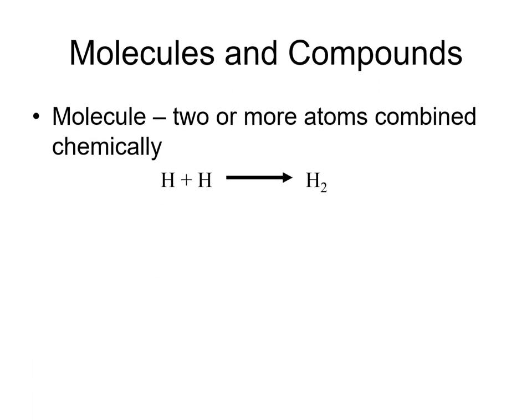Let's start our discussion by defining molecules and compounds. A molecule, by definition, is two or more atoms combined chemically. We can take two hydrogen atoms, form a bond between them, and form molecular hydrogen, or H2.